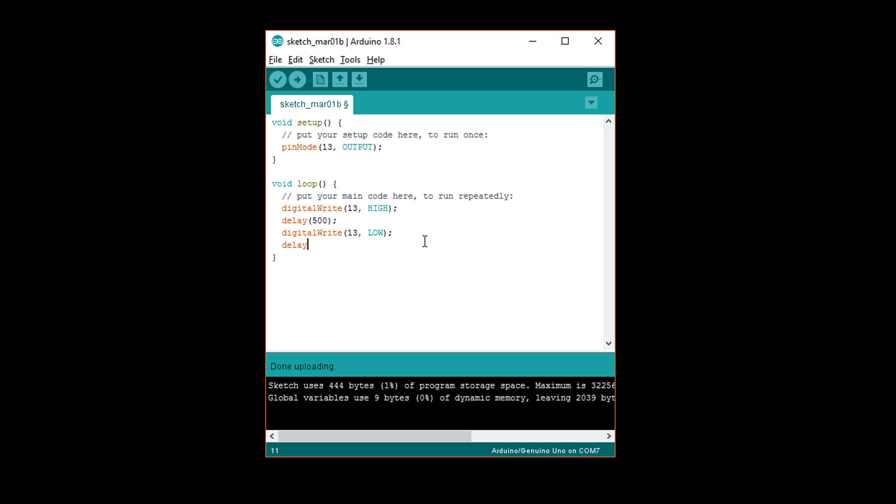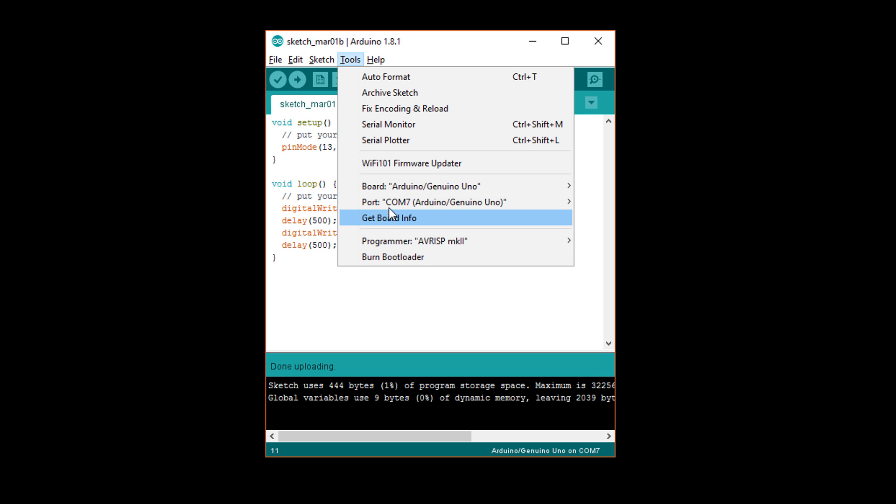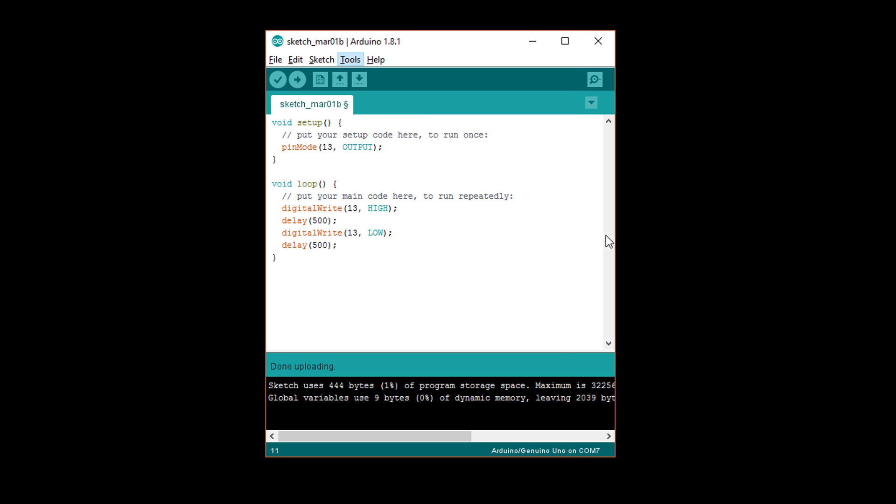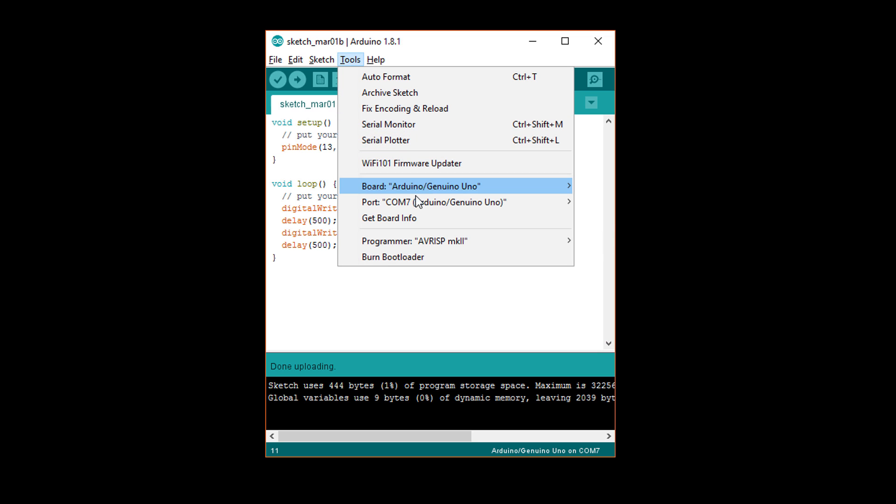Finally, write delay 500 to wait for another half a second. Select your board and port and click the upload button. Your program should compile and be sent to the Arduino.